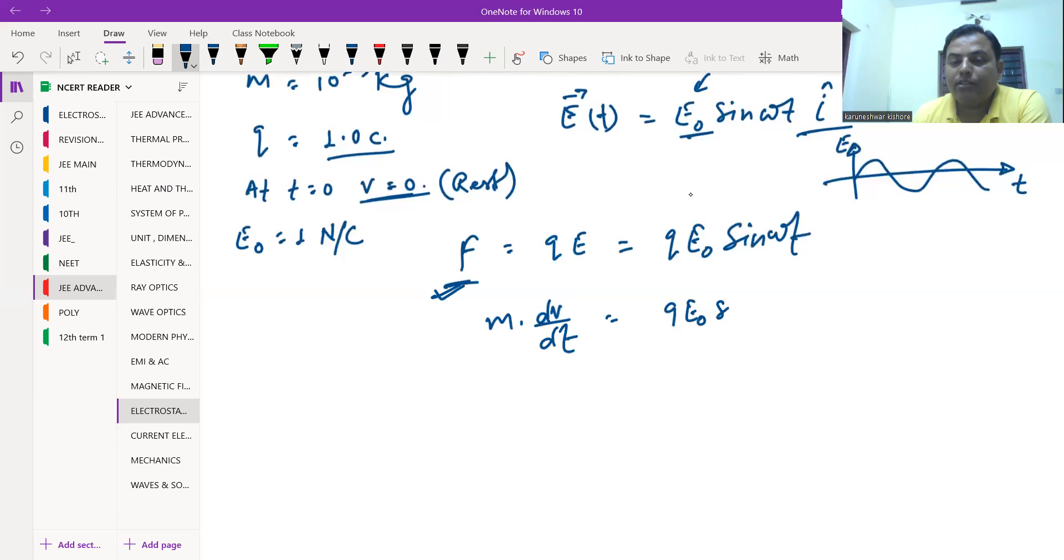We have two variables here: velocity and time. So we have to separate them. One side dv and the other side sin(ωt) dt.